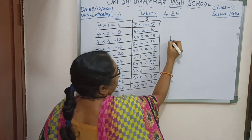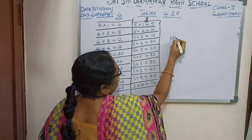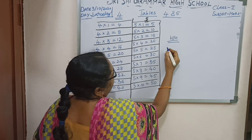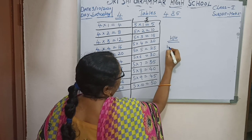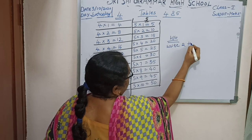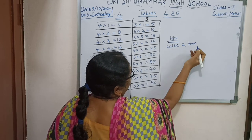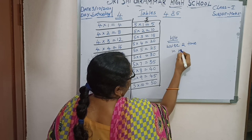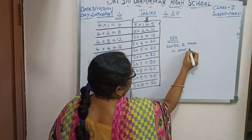Homework: today's homework is 4 and 5 tables. Write 2 times each table in your notebook.